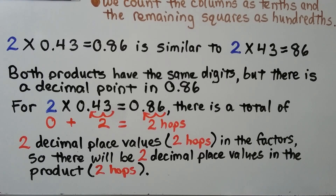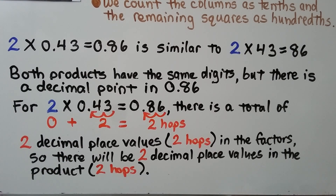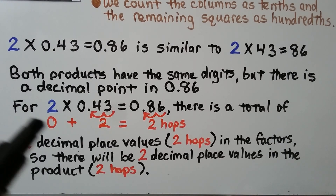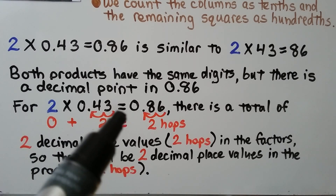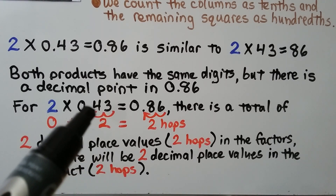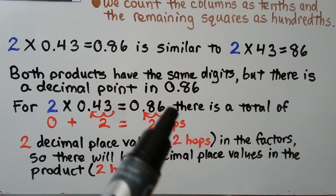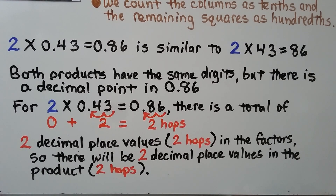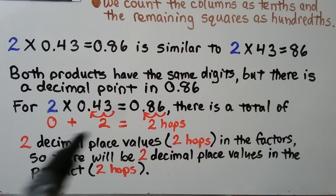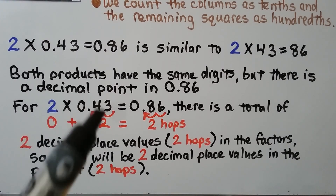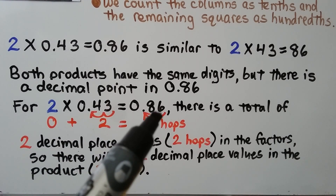That's similar to two times forty-three equals eighty-six. Both products have the same digits — an eight and a six — but there is a decimal point in eighty-six hundredths. For two times forty-three-hundredths, we have zero decimal places for the two (it's a whole number), but we have two decimal place values in forty-three-hundredths — two hops from the right side to the decimal point. So there will be two decimal place values in the product. However many total decimal places, or hops, that are in the factors will be how many decimal place values, or hops, that will be in the product.